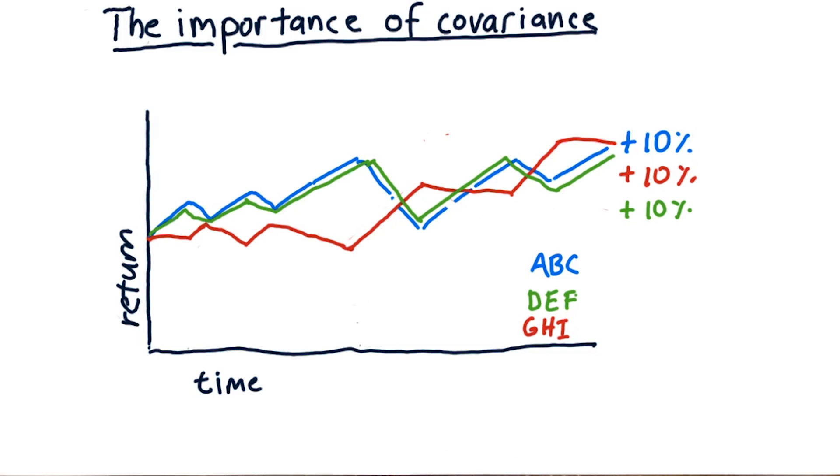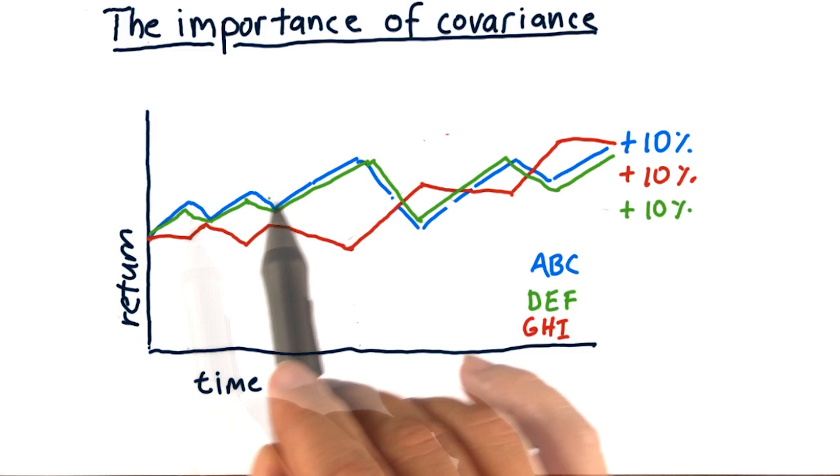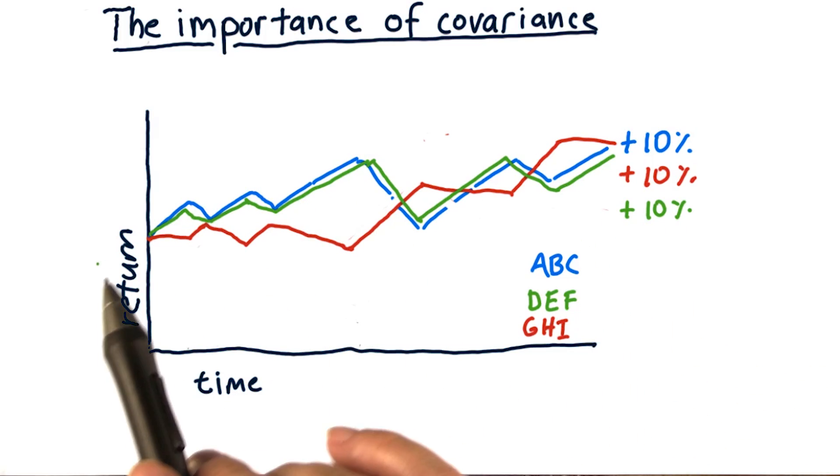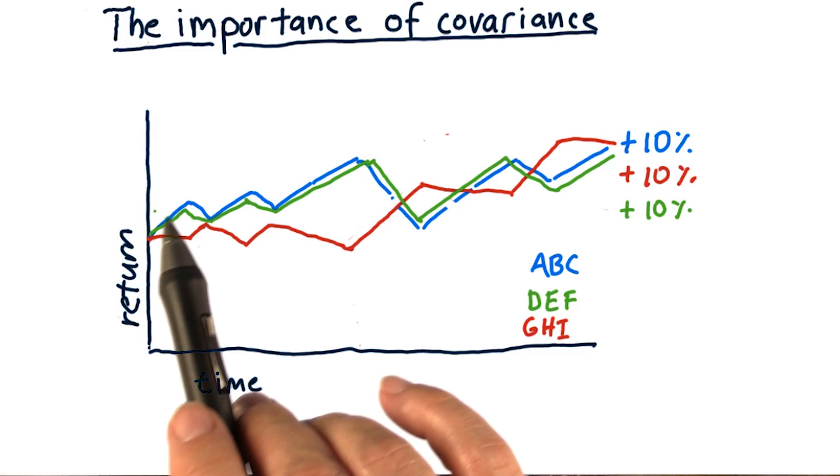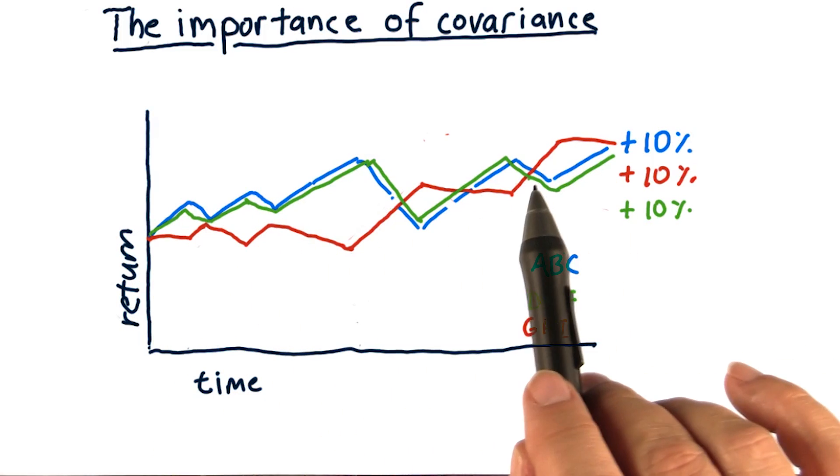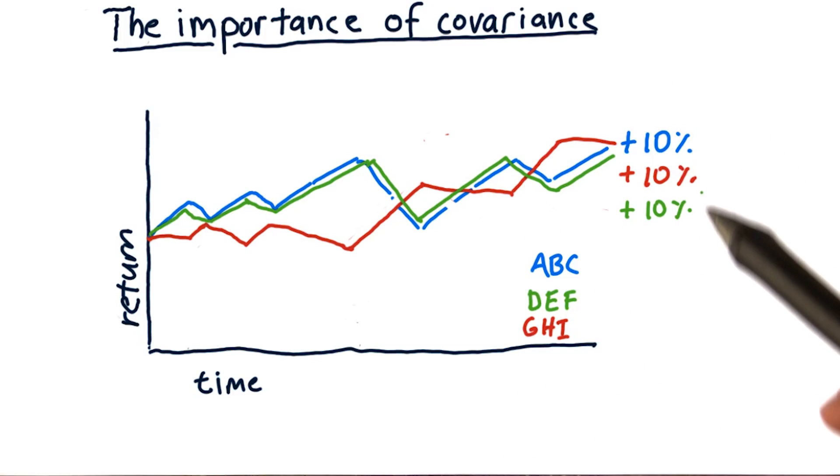Finally, here's our last stock that we'll take a look at, DEF. Note how it goes almost in lockstep with ABC. So three stocks, two that move together very similarly and one that moves opposite them sometimes. Yet they've all provided about 10% return.